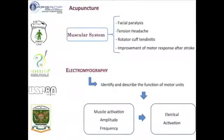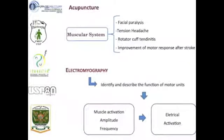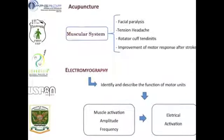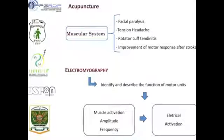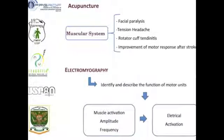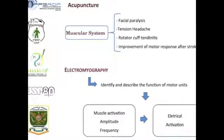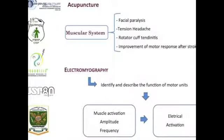Clinical and experimental studies, based on the modern scientific model, have demonstrated the efficacy of acupuncture in various biological systems. Neurochemical, histological, and neurophysiological studies have attempted to elucidate the action mechanisms of acupuncture. A few studies have indicated favorable results of acupuncture in the treatment of facial paralysis, tension headaches, rotator cuff tendinitis, and improvement of motor response after stroke.